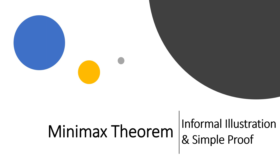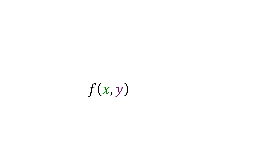Minimax theorem: informal illustration and simple proof. We have a function f of two variables x and y.